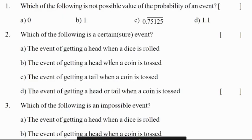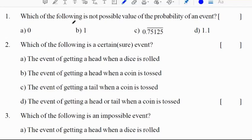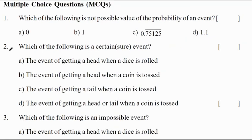Which of the following is not a possible value of the probability of an event? We know the probability always lies between 0 and 1 including 0 and 1. 0 is correct. 1 is also correct. 0.75 is less than 1. So it is also correct. 1.1 is greater than 1. So correct option is D.